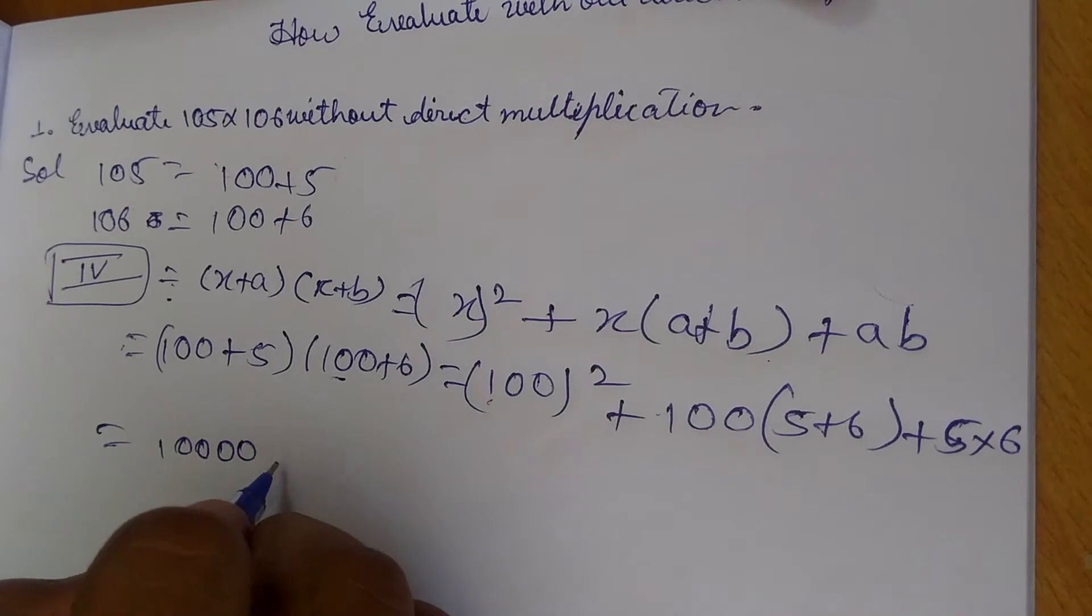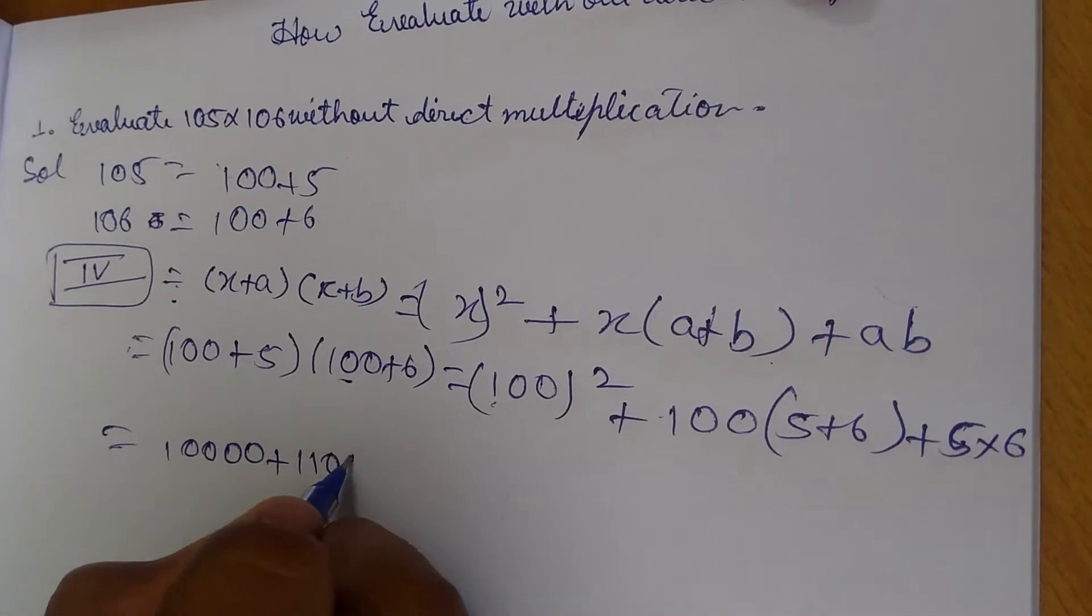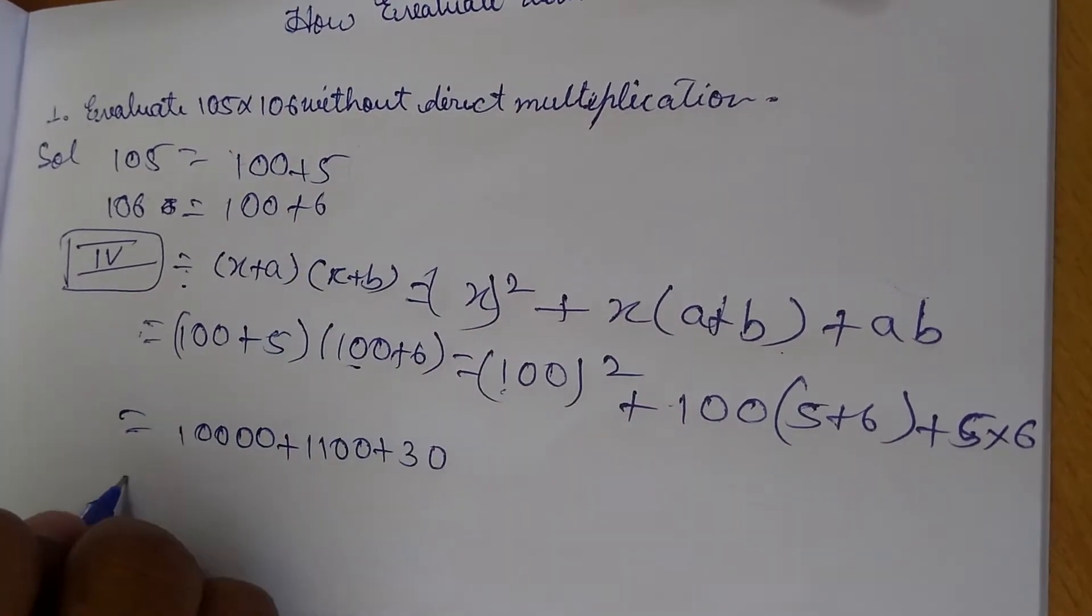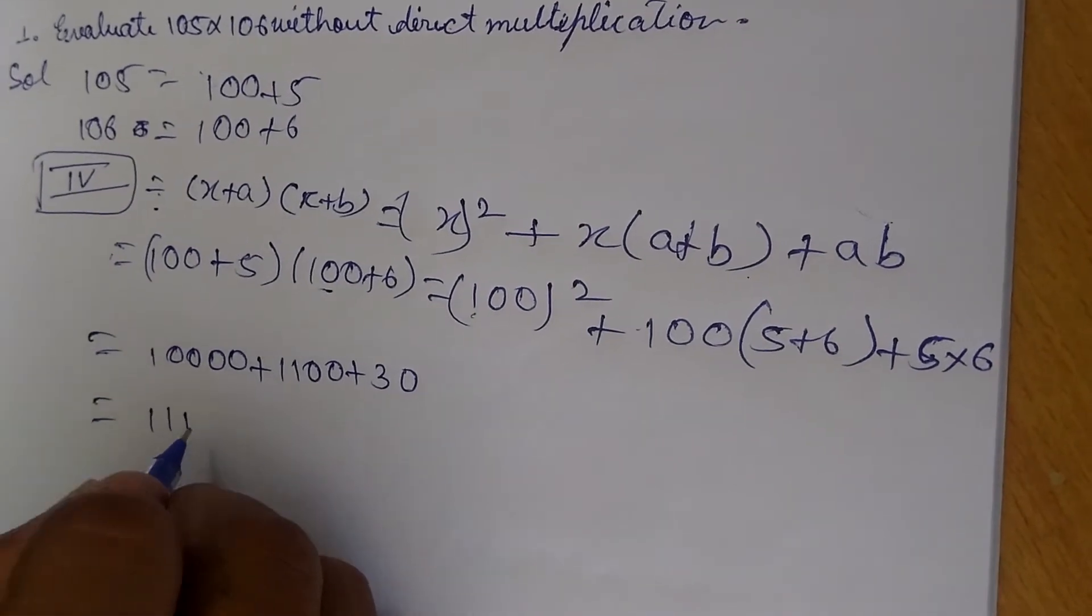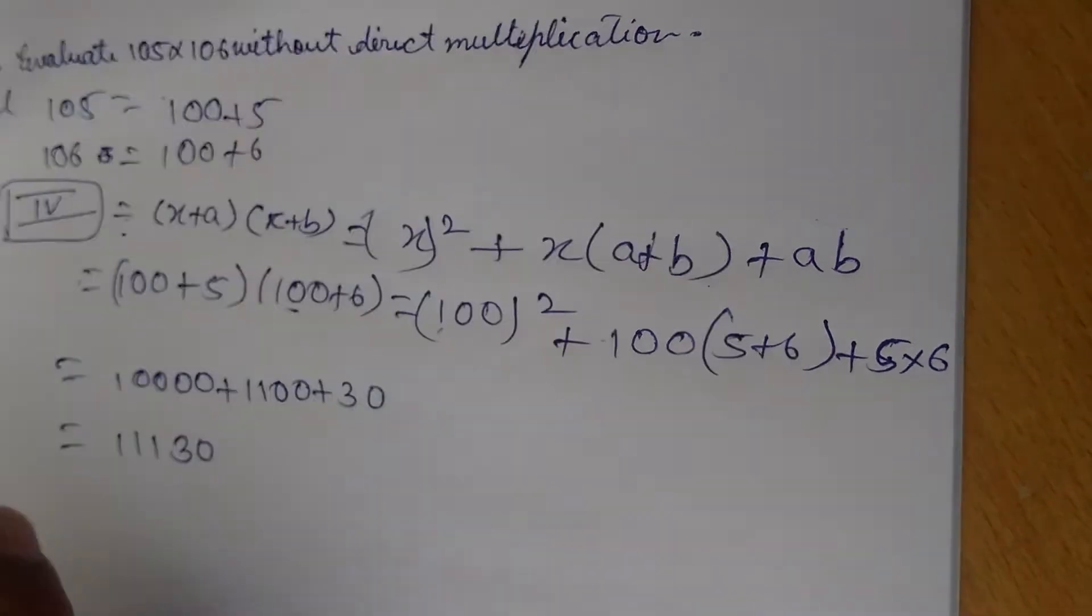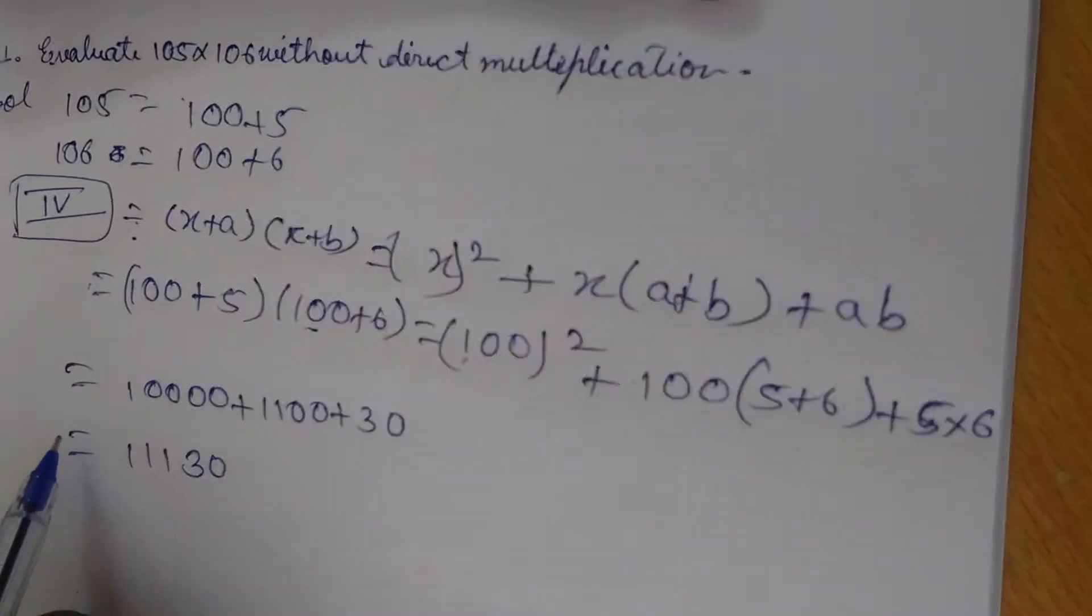Now it is 10000 plus 1100 plus 30, and now it is 11130.